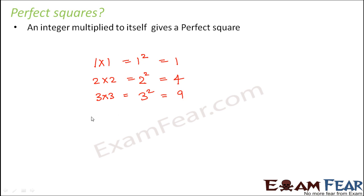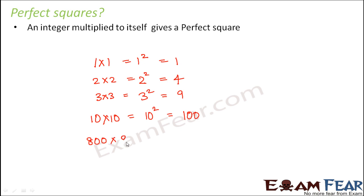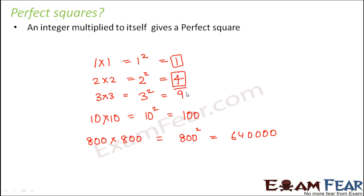Let's take some bigger numbers. 10 multiplied by 10 gives 10 squared, which is 100, so 100 is a perfect square. If you have 800 multiplied by 800, it gives 800 squared, which is 6,40,000. So this is also a perfect square. Whenever a number is obtained by multiplying an integer with itself, that number is called a perfect square.